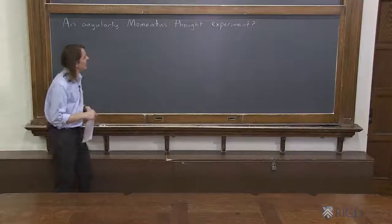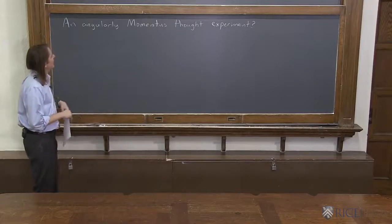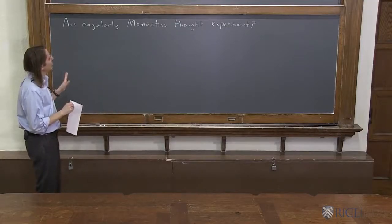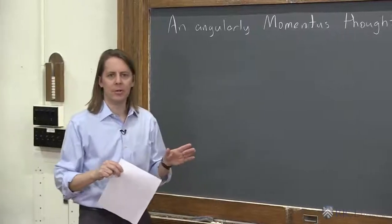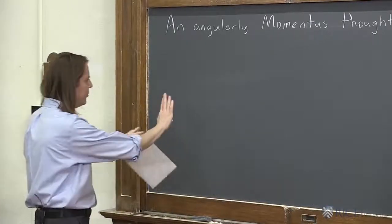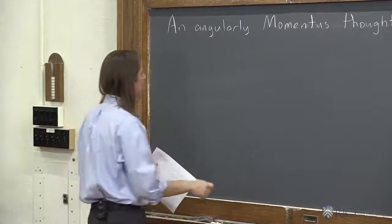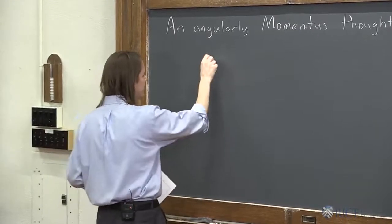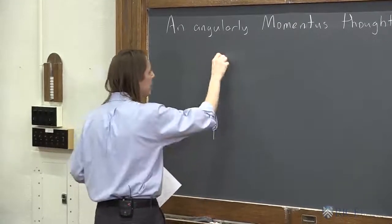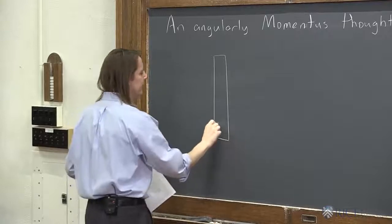The first question we're going to ask ourselves is, we're going to do an angularly momentous thought experiment. Here we go. The board is a frictionless table, and on this frictionless table is a bar of mass m.